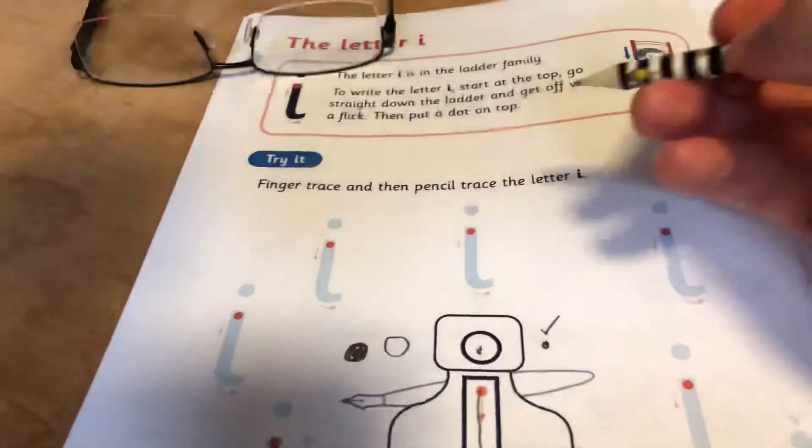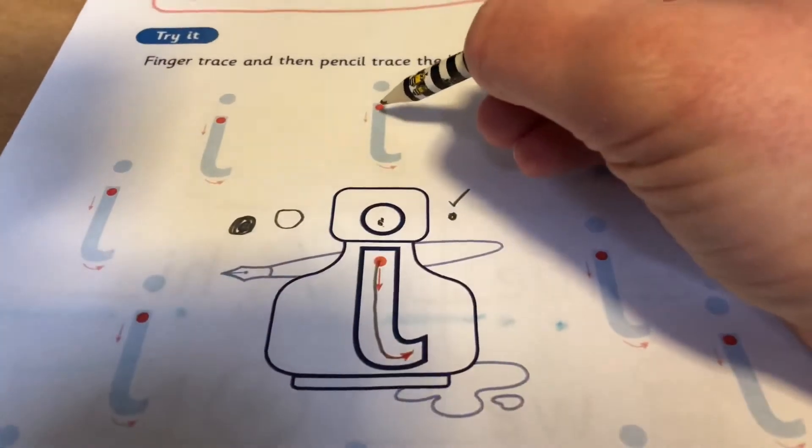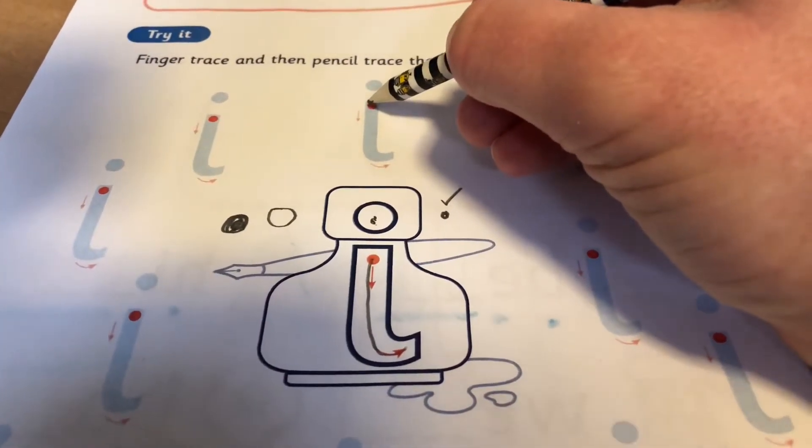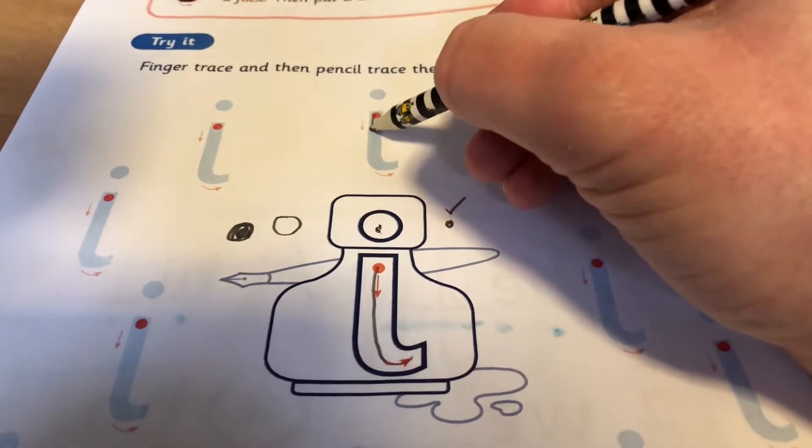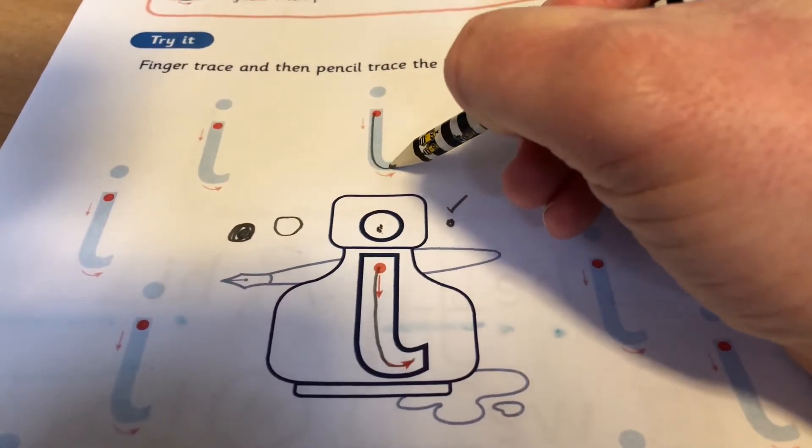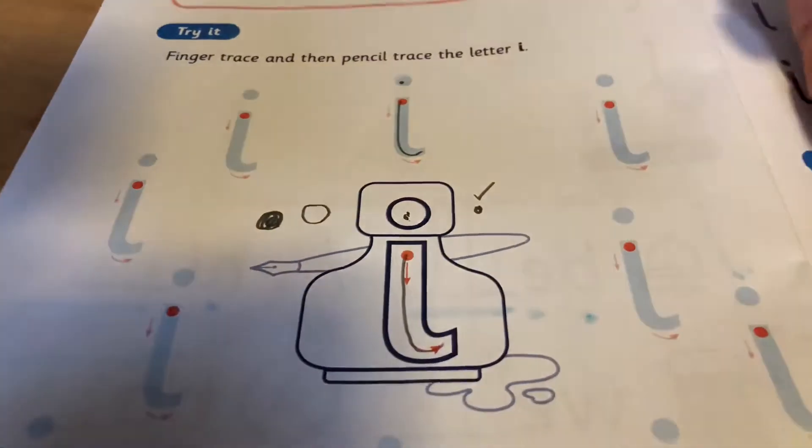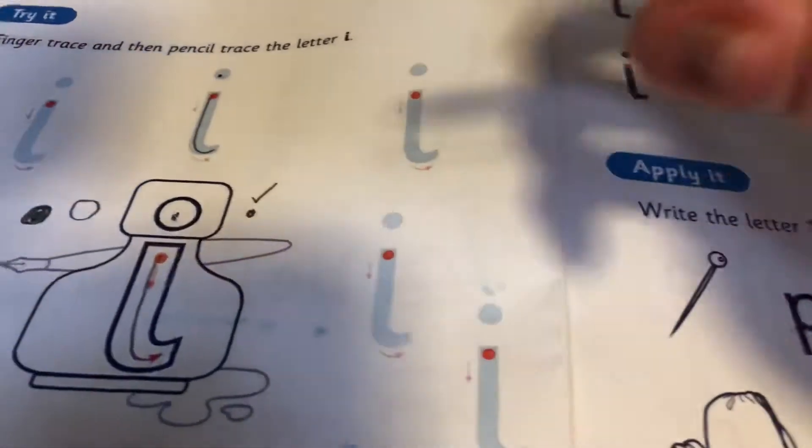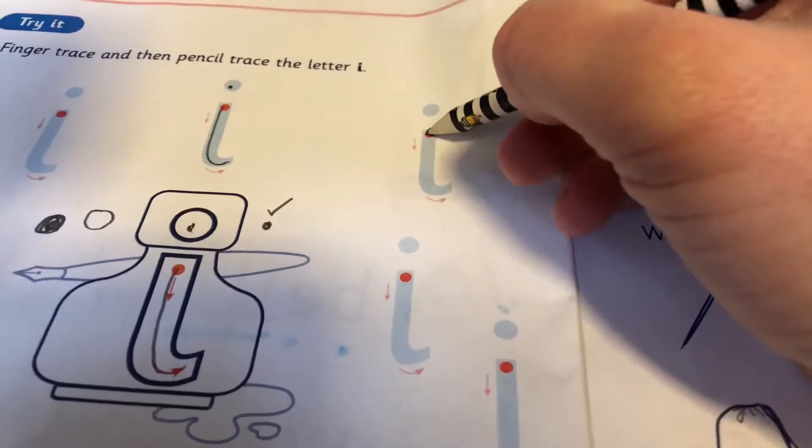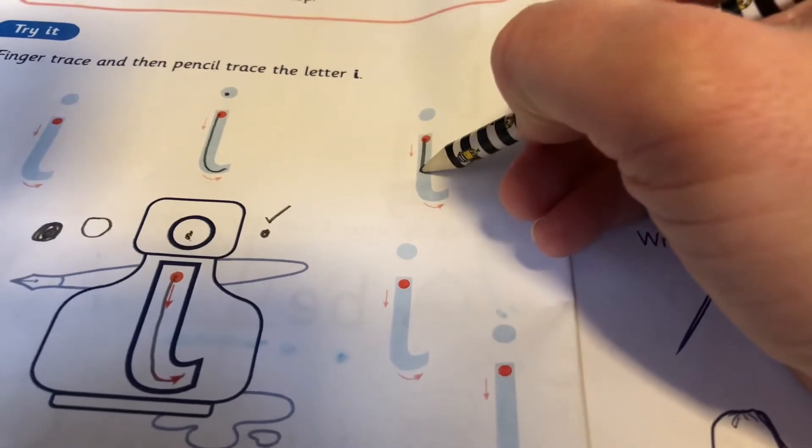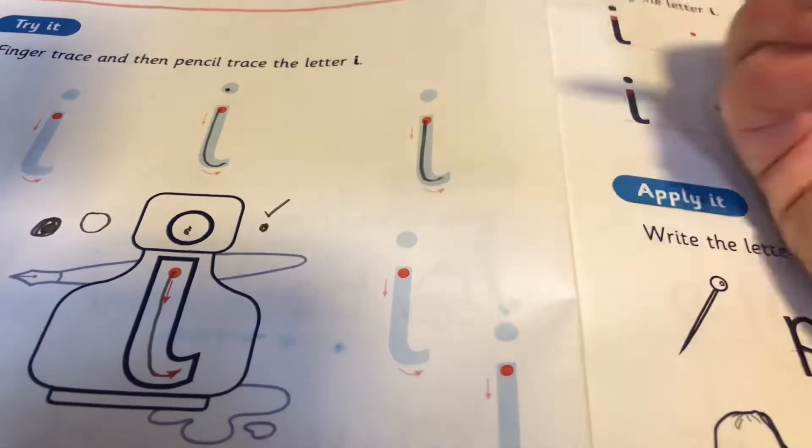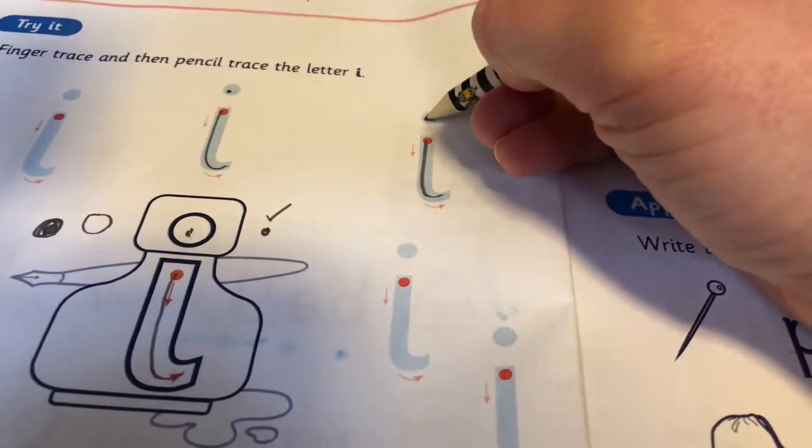One just like that. So then what you've got to do is practice on the faint blue one. So start at the top, come all the way down and flick. Take your pencil off and do the dot. Now if you watch, I'm going as straight as I can. It's not wiggly this line. It's straight and flick and a dot.